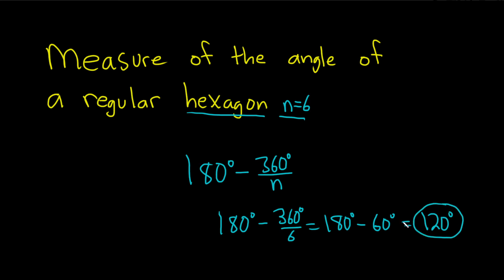So 120 degrees is the answer. All you have to do to solve this problem is memorize that a hexagon has six sides and memorize that this is the formula for the measure of the angle of a regular n-gon. I hope this video has been helpful.